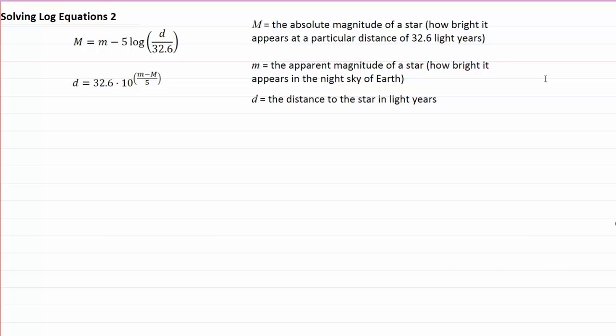So I'd like to do an example that uses that. Let's suppose we look at a star and just by looking at it, we find out that the apparent magnitude m is 5.05. By some means, we determine that its absolute magnitude is minus 8.73.